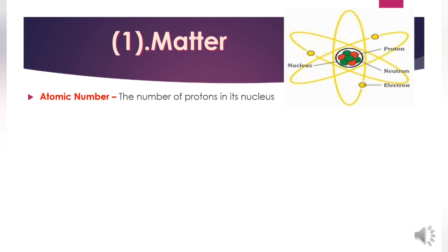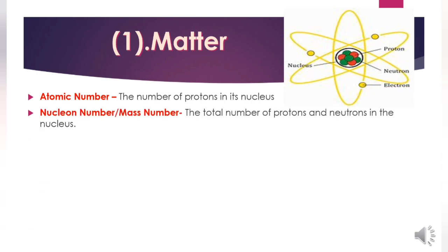All nuclei heavier than hydrogen contain neutrons too. The number of protons in each nucleus is called the atomic number. The total number of protons and neutrons in the nucleus is called the nucleon number. Sometimes the number of protons does not equal the number of neutrons.